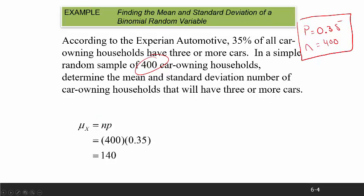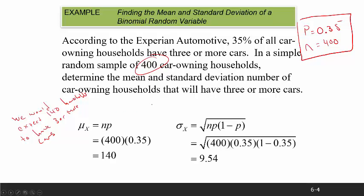The formula is very simple. The mean is just n times p, so you take 400 and multiply it by 0.35 to get 140. This means in a sample of 400, we would expect 140 households to have three or more cars. But every time you do a sample of 400, you're not going to get exactly 140, so we also compute the standard deviation: the square root of 400 times 0.35 times 0.65, which gives 9.54.